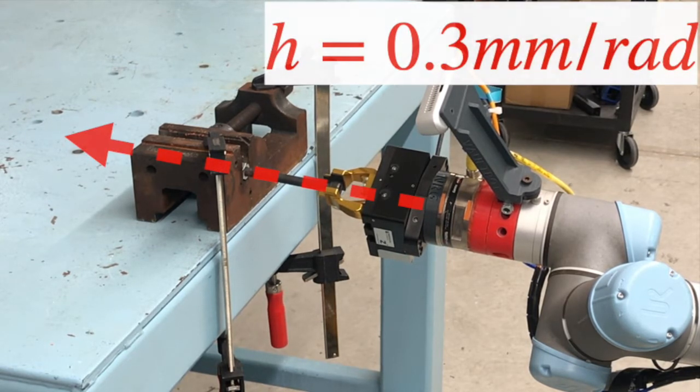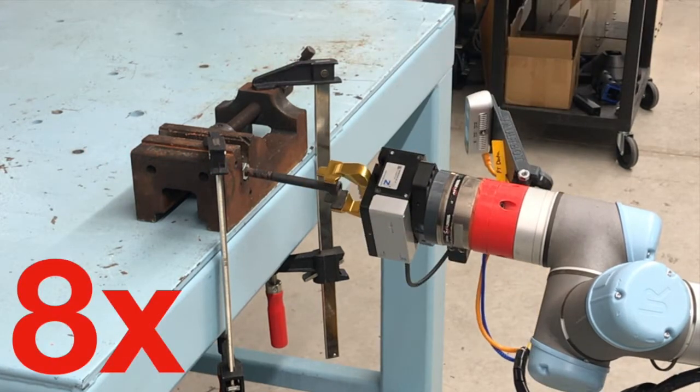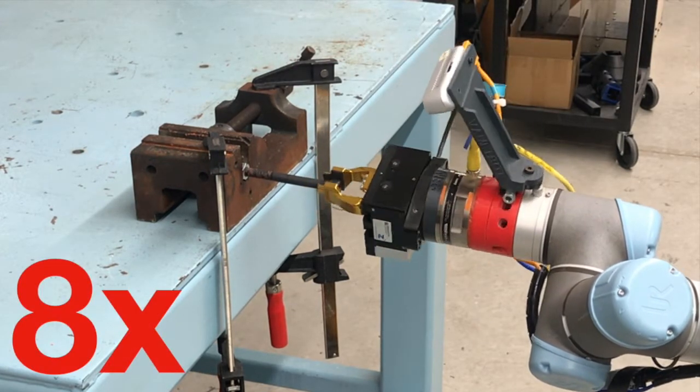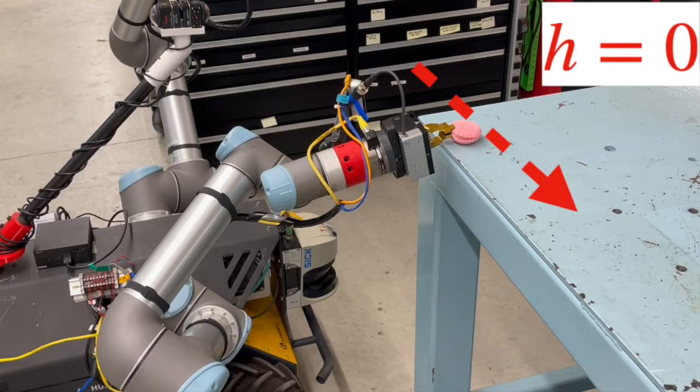Considering the forces and torques needed during the manipulation action increases robustness to task uncertainty and enables performing delicate tasks such as opening this jewelry box.